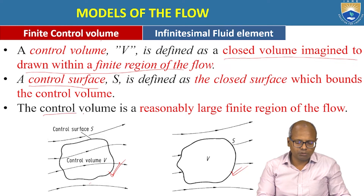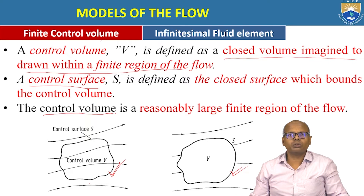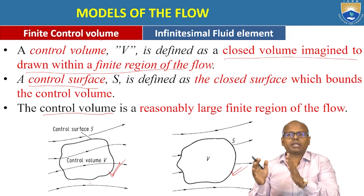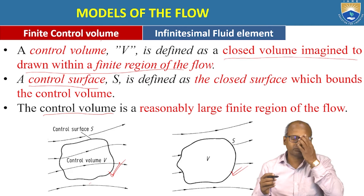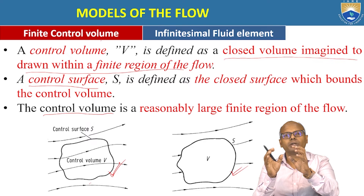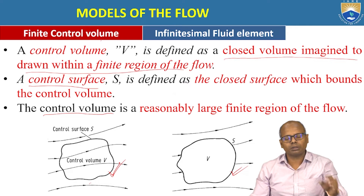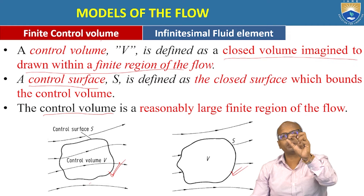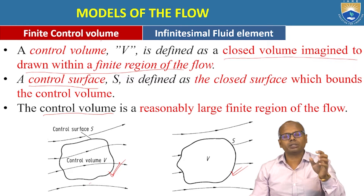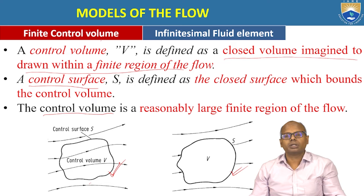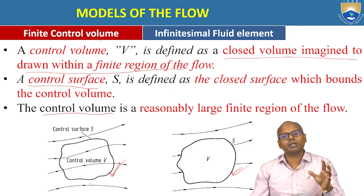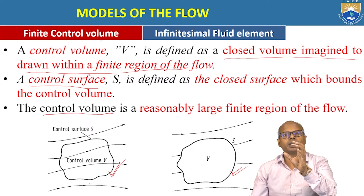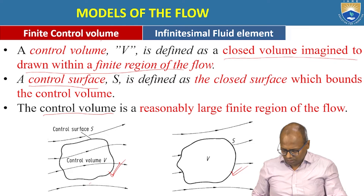The control volume should be a reasonably large finite region of the flow. At any given point, there should be some particles inside the control volume. If I take a control volume of the order of one particle of the fluid, the particles are loosely packed and there is a chance the control volume becomes empty. The control volume size should be reasonably big so that at any particular time there are some finite elements inside.